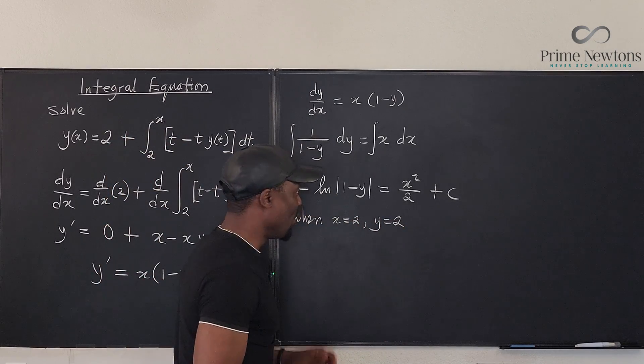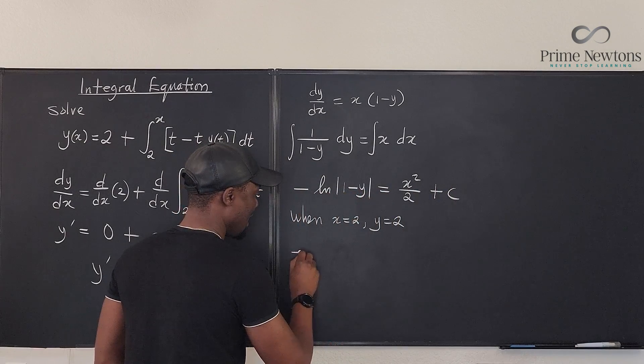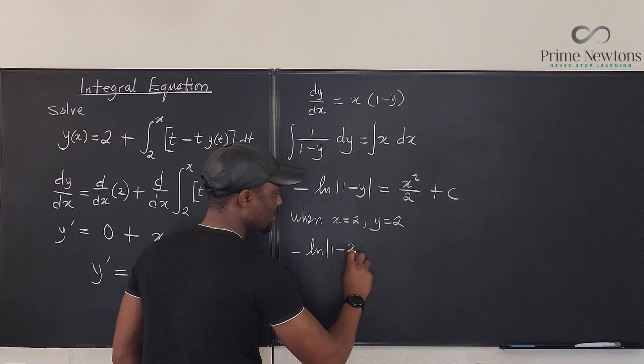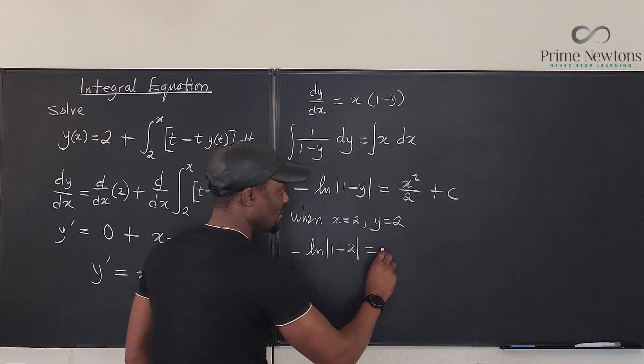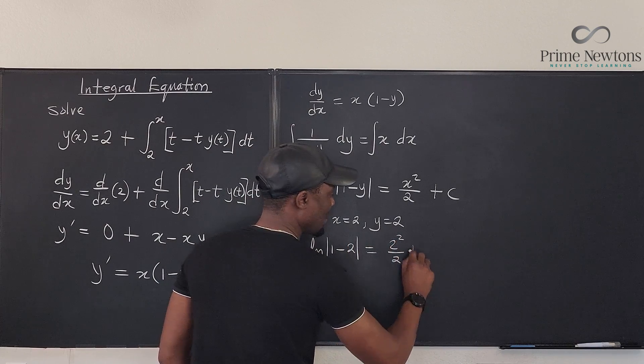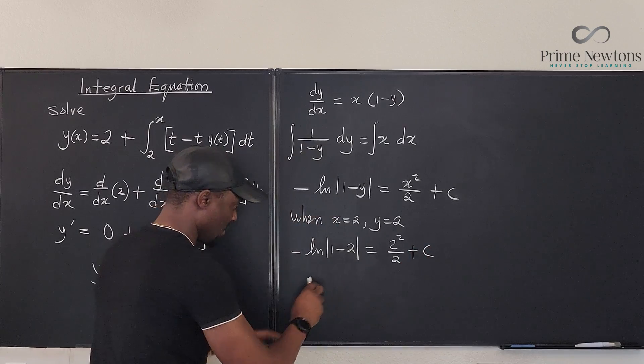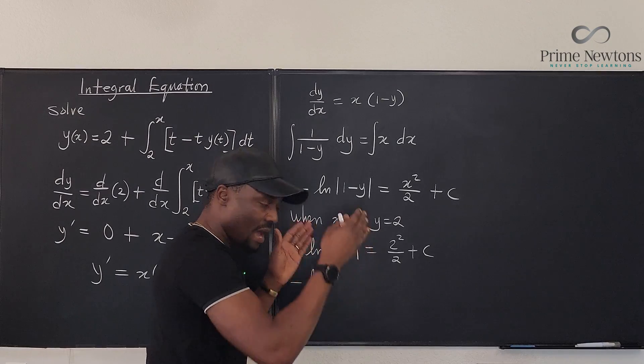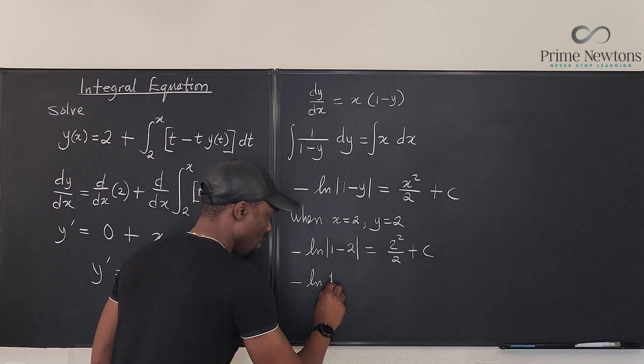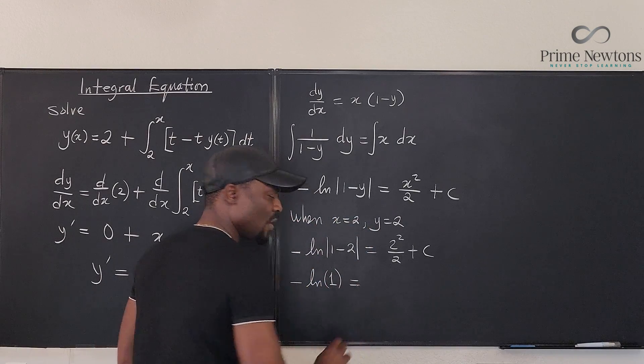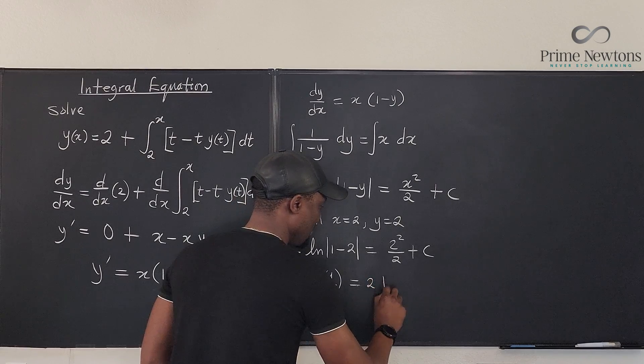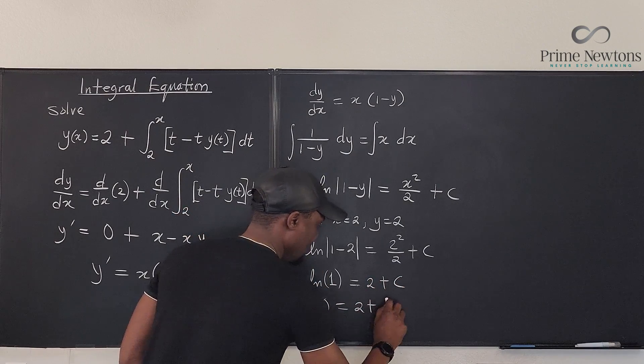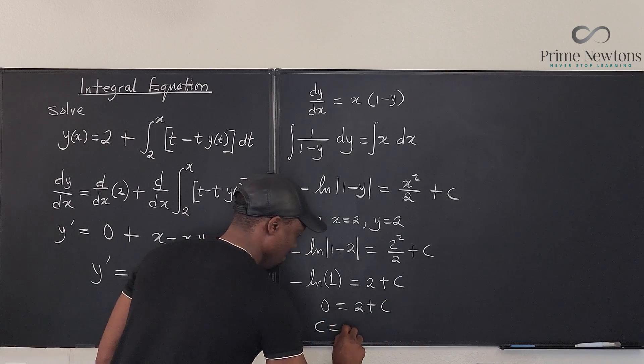So what do we do? You just go plug in that value here. Negative natural log of (1 - 2) will be equal to 2 squared over 2 plus c. Well, negative natural log of (1 - 2) is minus 1, but the absolute value gives us 1. What is the natural log of 1? Well, we know it's 0. So everything here is 0. 0 equals 2 plus c, and that means c equals negative 2.